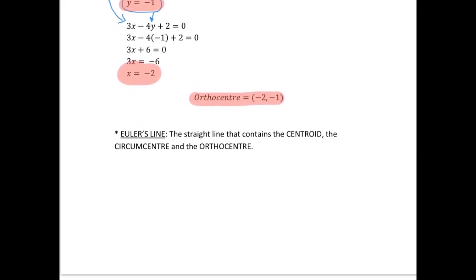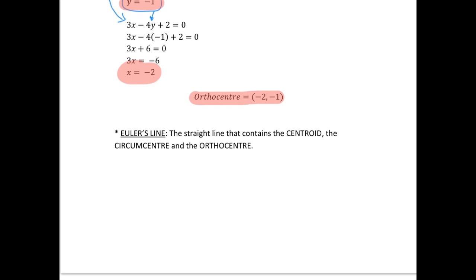One thing to note is that there is a line called Euler's line, which is the straight line that contains the centroid, the circumcentre, and the orthocenter.